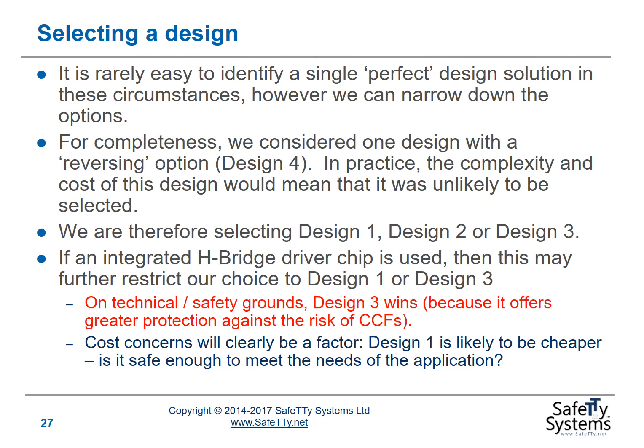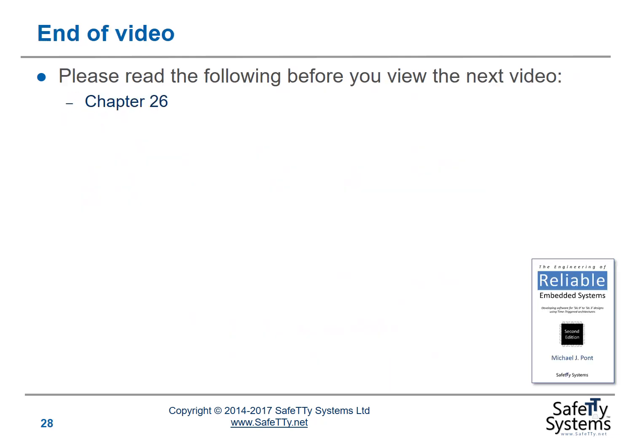What we've tried to do in this study is illustrate how some of the platforms presented in previous videos can be used to quickly explore a set of potential design options for a non-trivial safety-related embedded system. The design platforms don't result in a single perfect design — rather, they give us a means of quickly exploring a range of possible design options, after which we consider the precise needs of a particular application to select an appropriate solution. That brings us to the end of this video. Please read chapter 26 in the ERES-2 book before you continue with the course. Thank you for watching.